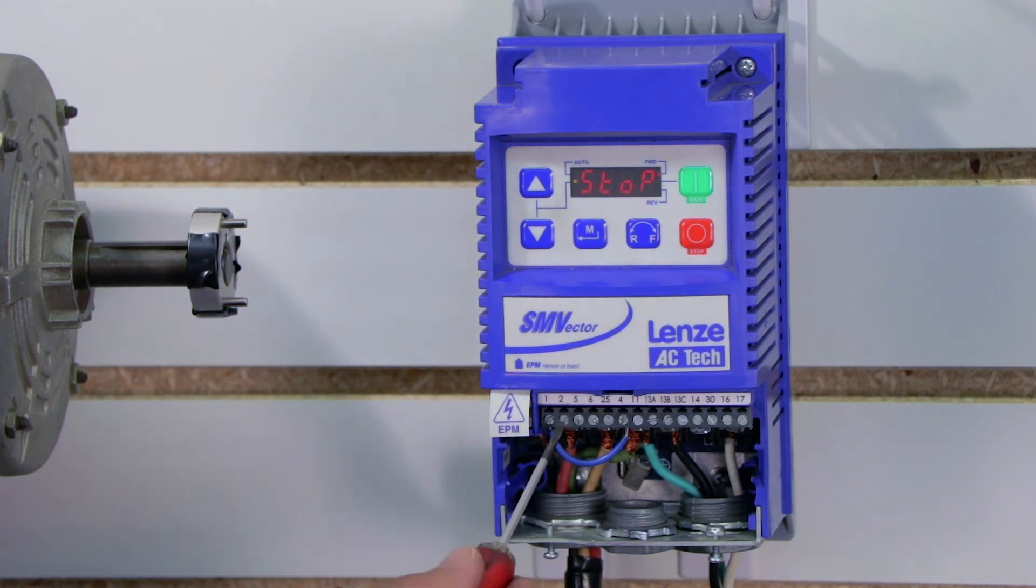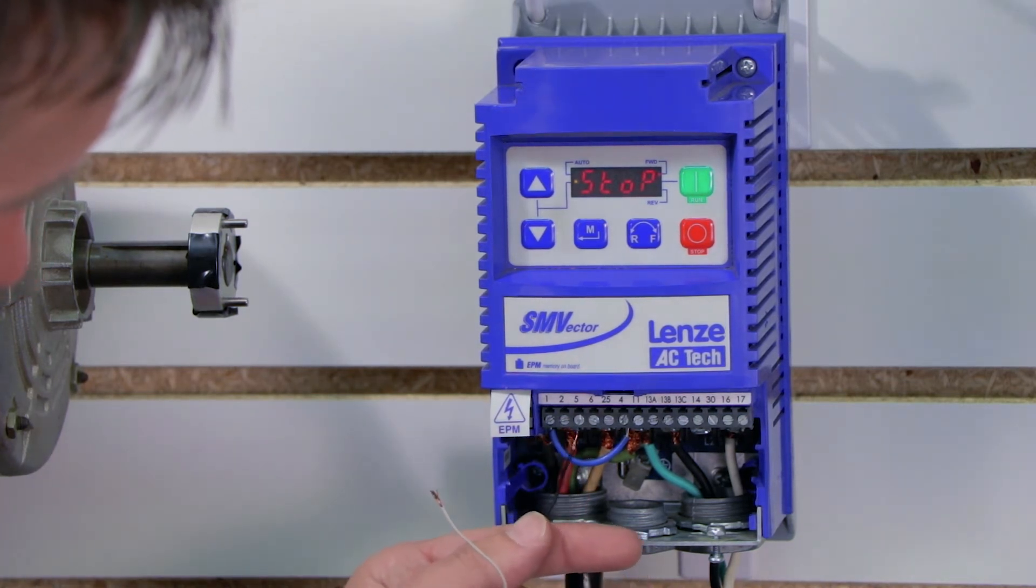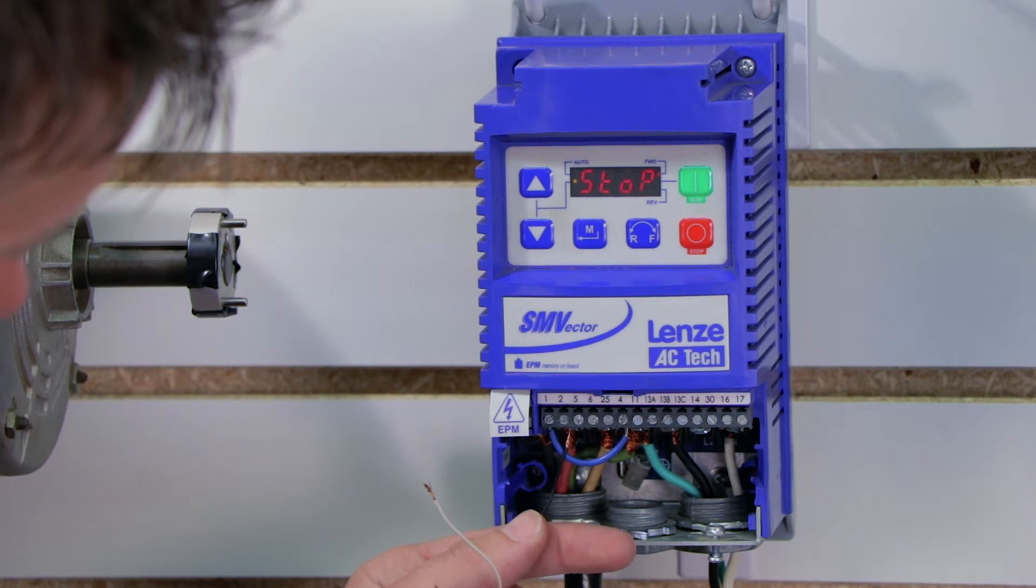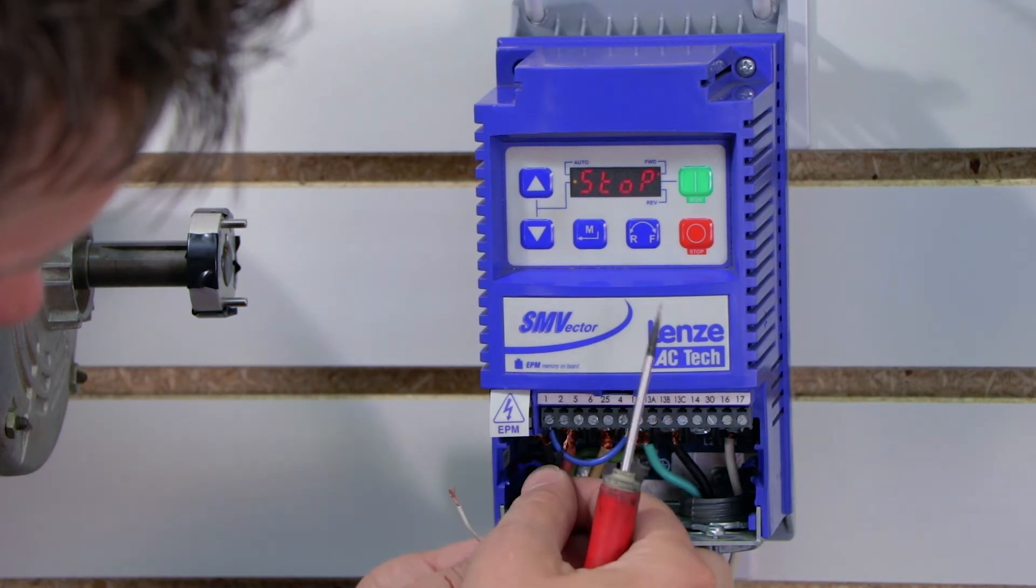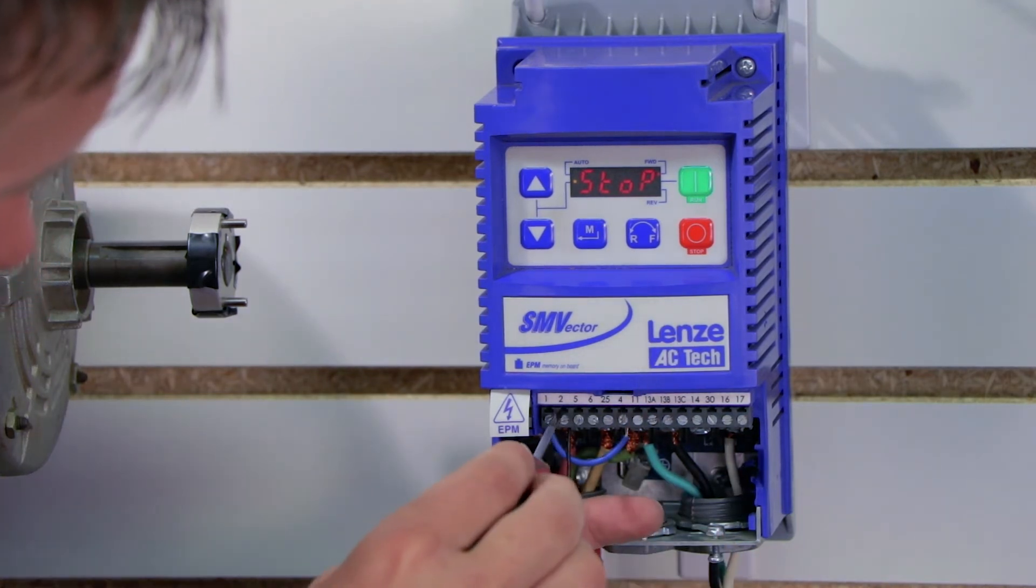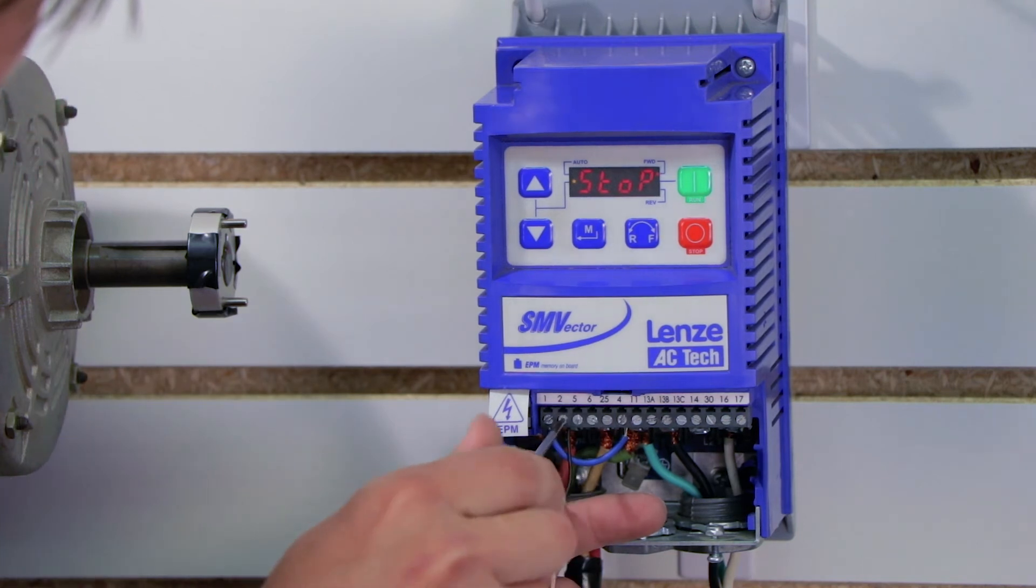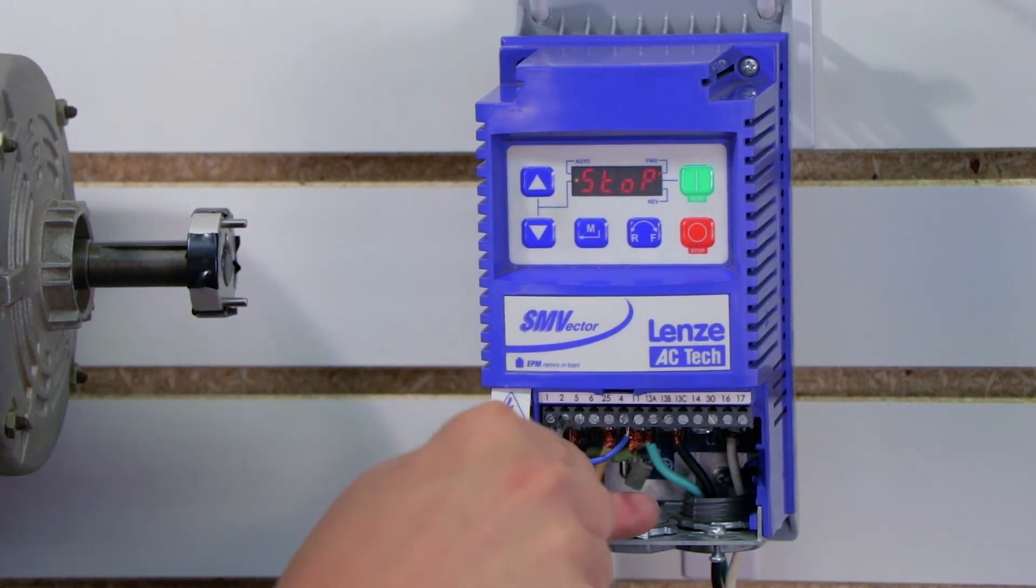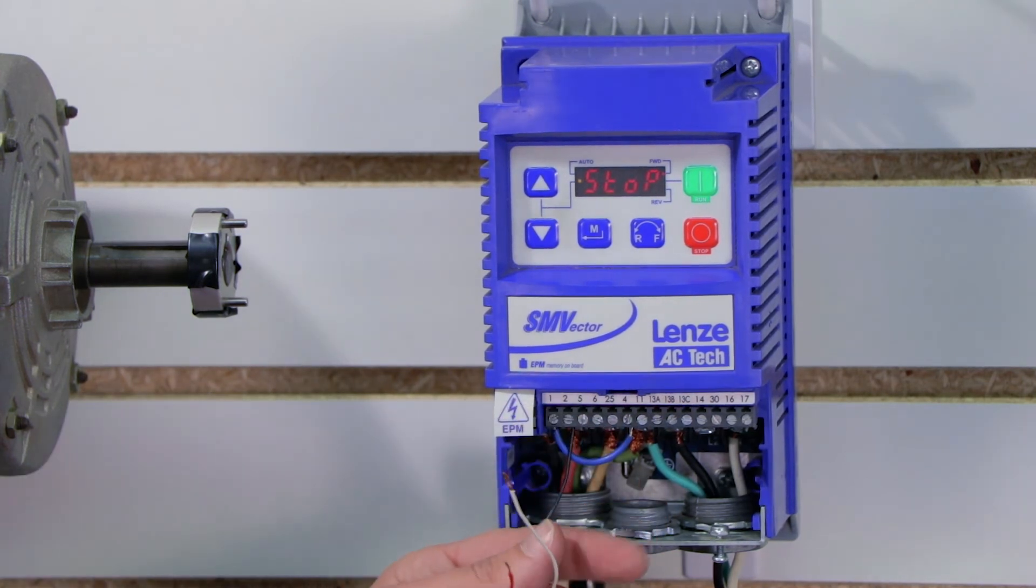Now as I said before, we're going to use terminals 2, 5, and 6. In the manual, terminal 2 is my common and as I said earlier we use black for the common so I'm going to go ahead and put black into terminal 2. It's a small wire, sometimes you got to wiggle it in there and then we tighten it. Don't over tighten it because you can actually strip out the screws which is never good.